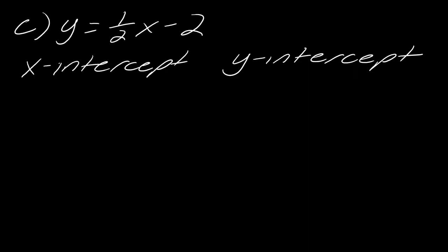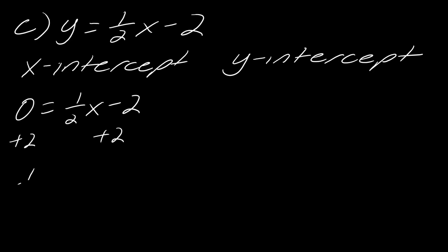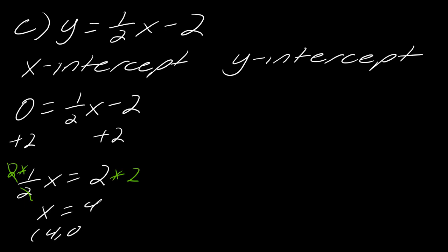I have one more example, and it's a slightly different way of looking at the equation. For the x-intercept, we set y equal to zero. Plugging in zero for y, I get one-half x minus two equals zero. I add two to each side to get one-half x equals two. To clear the fraction, multiply both sides by the denominator, the twos cancel out, and we get x equals 4. So the x-intercept is (4, 0).